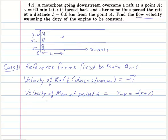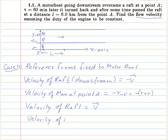Now let us also see what happens when the motorboat turns in the opposite direction - that is, it starts going upstream. The velocity of the raft will now be v. That is, the person on the motorboat will now see the raft coming towards him with a velocity of v. And the velocity of the man at point A will be minus r plus v.